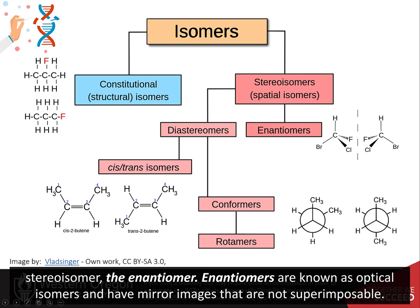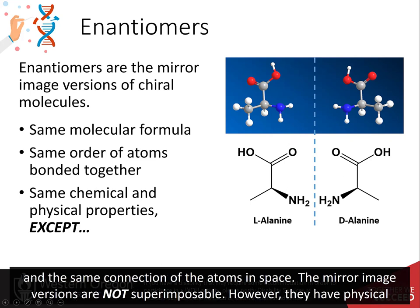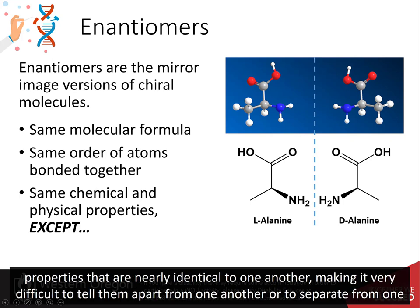Enantiomers are known as optical isomers and have mirror images that are not superimposable. Enantiomers are the mirror image versions of chiral molecules. They have the same molecular formulas and the same connection of the atoms in space. The mirror image versions, however, are not superimposable. They have physical properties that are nearly identical to one another, making it very difficult to tell them apart from one another or to separate them from one another.